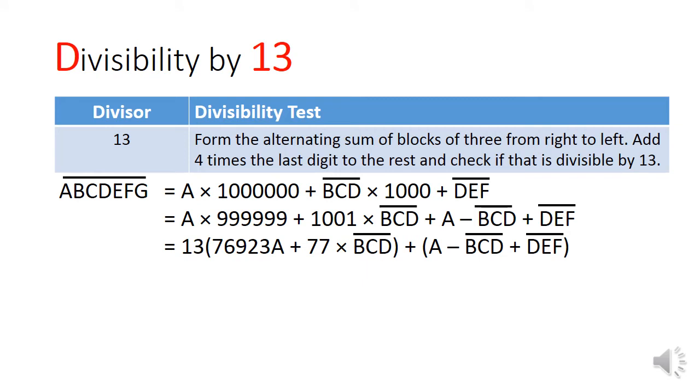For 13, we can first do an alternating sum of blocks of 3 digits from right to left. Next, we can add 4 times the last digit to the rest to check if that is divisible by 13. Let's have a look at a proof for a 7-digit number, which is easily extendable to larger numbers.